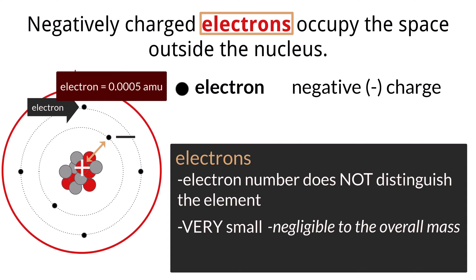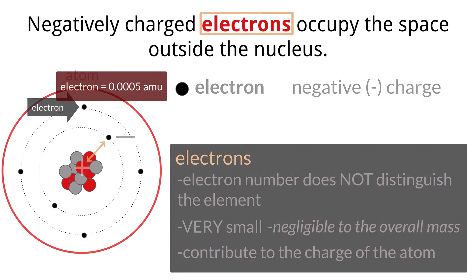For that reason we consider the mass of electrons to be negligible to the overall mass of an atom. But electrons do carry a charge, and they do contribute to the overall charge of an atom. We will talk more about this in future videos, but the idea is that if an atom gains or loses electrons, they can either gain or lose negative charges, which balance out with the positively charged protons in the nucleus and lead to many things like bonding.